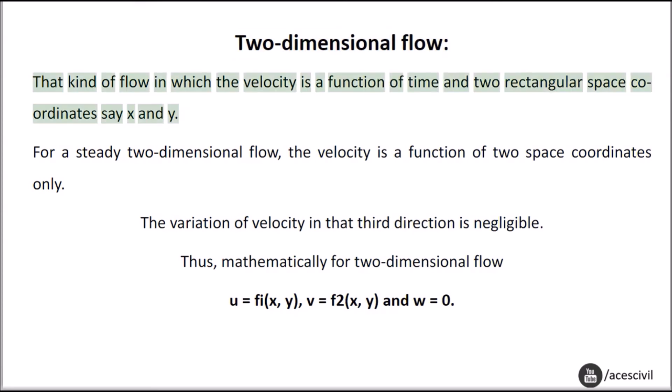Two-dimensional flow: That kind of flow in which the velocity is a function of time and two rectangular space coordinates, say x and y. For a steady two-dimensional flow, the velocity is a function of two space coordinates only. The variation of velocity in that third direction is negligible. Thus mathematically for two-dimensional flow: u = f₁(x, y), v = f₂(x, y), and w = 0.